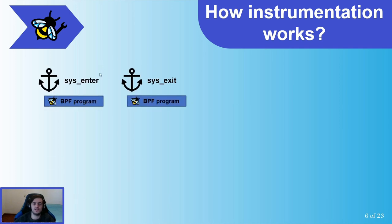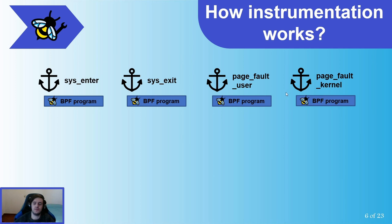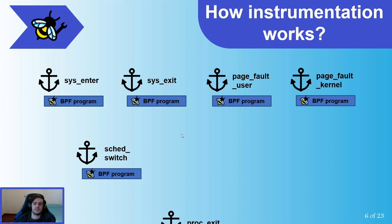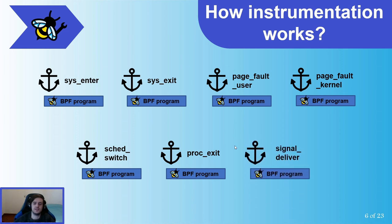We trace the entire flow of our syscalls, starting with the sysenter hook and terminating with the sysexit one. After that, we have the page fault user and page fault kernel hooks, whose job is quite intuitive — they catch all page fault events. Below that, we have the sched switch hook which catches context switches, the process exit hook that collects all terminated processes, and lastly we capture all system signals through the signal deliver hook. These are the seven hooks involved in our instrumentation.